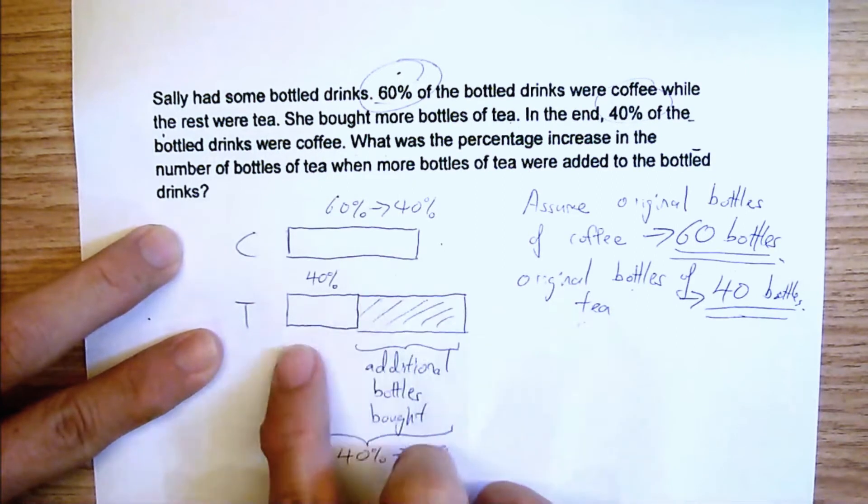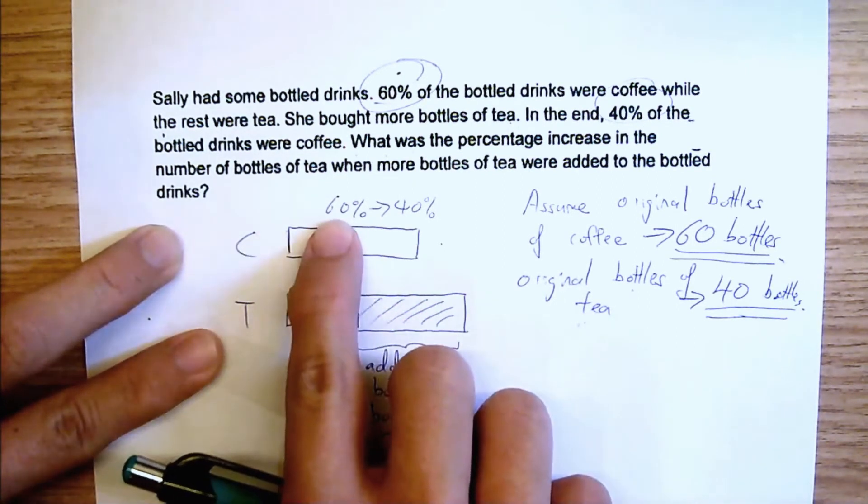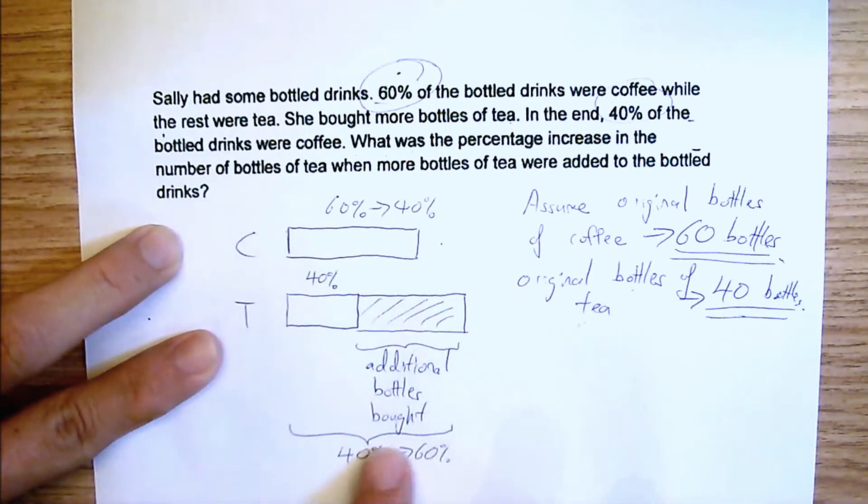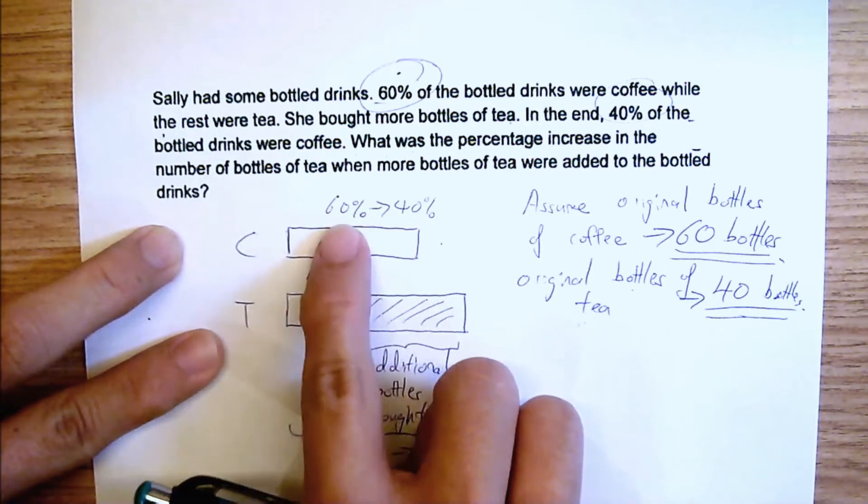Now, after they have added in this additional amount, they suddenly realized that this one became from 60% to 40%, and this entire thing is now 60%, correct? What did not change here? This did not change. Which means that this 40% did not change over here.